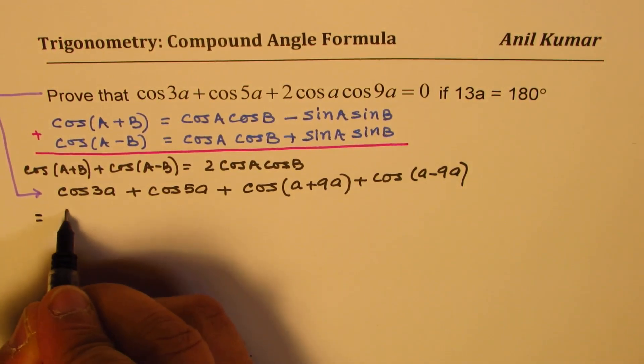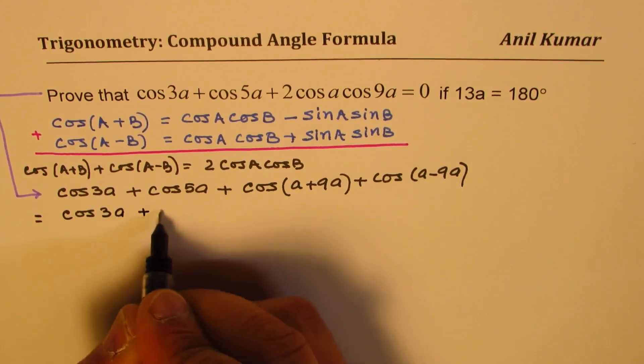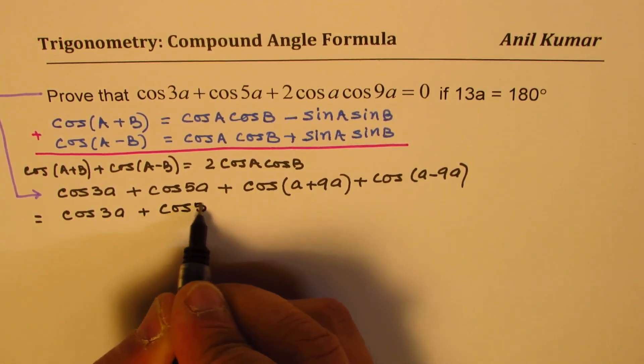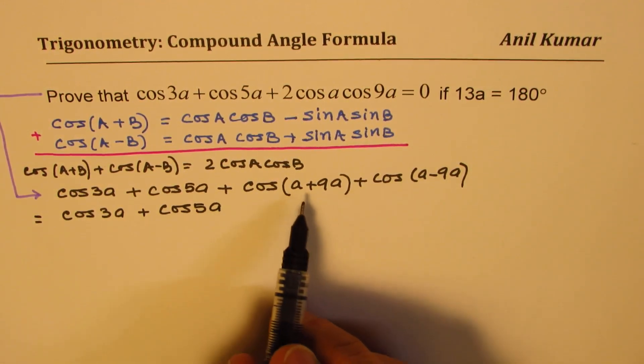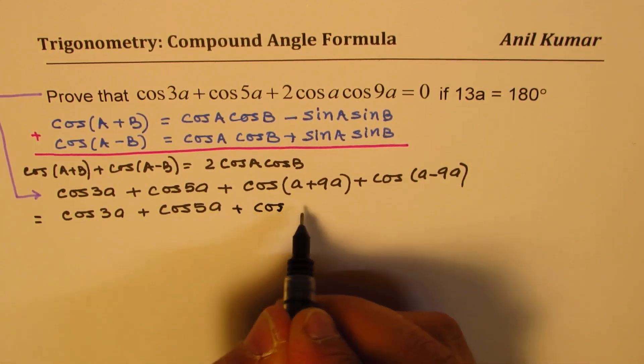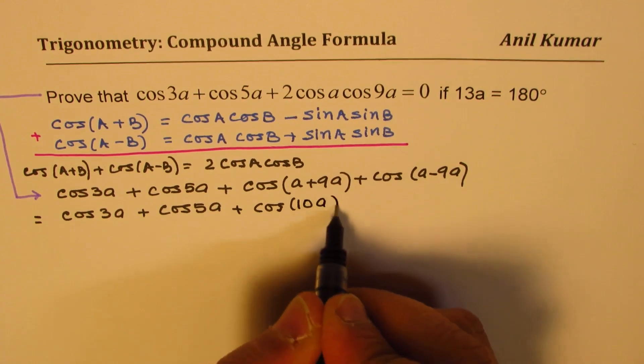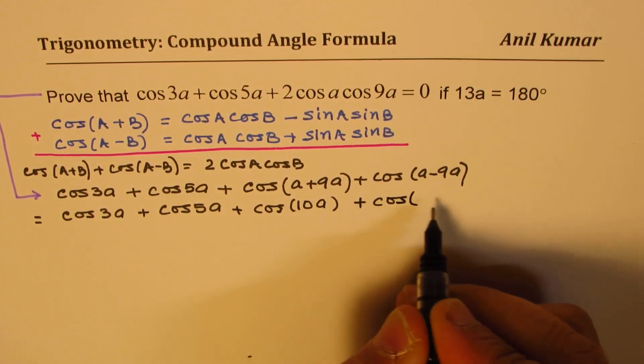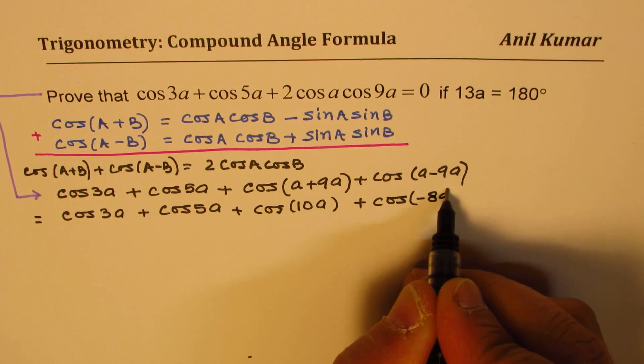Now this can be written as cos 3a plus cos 5a. Now a plus 9a is 10a.